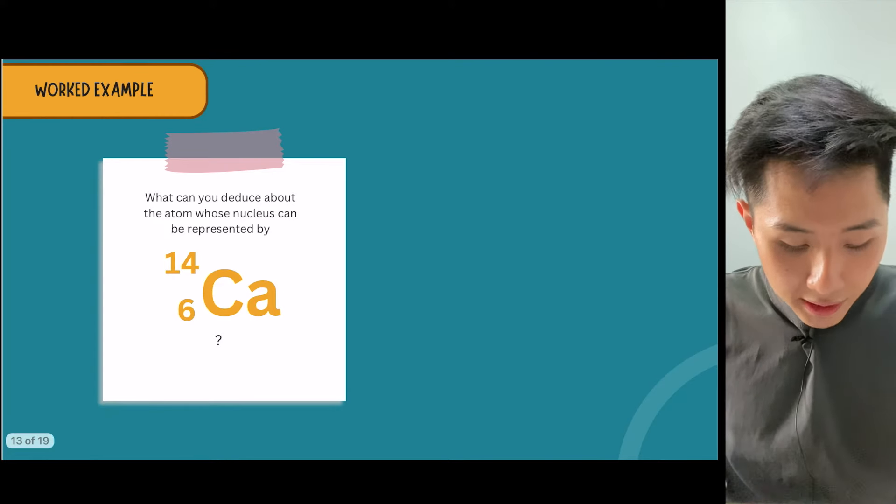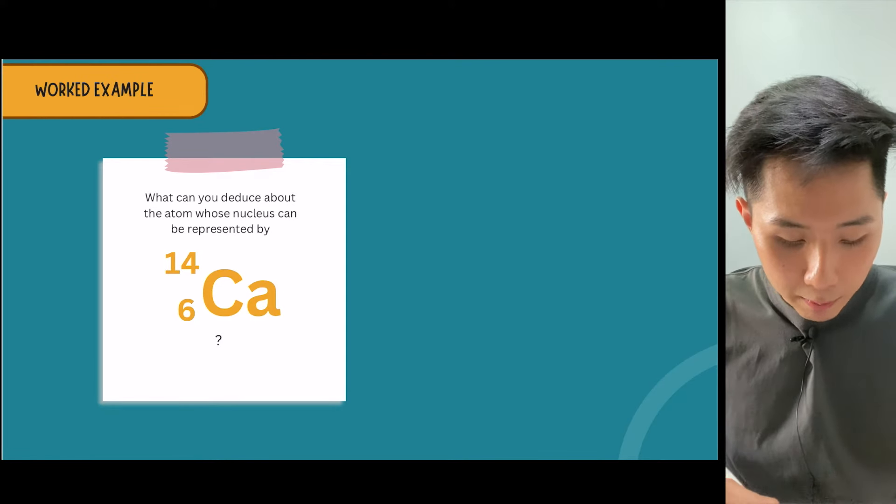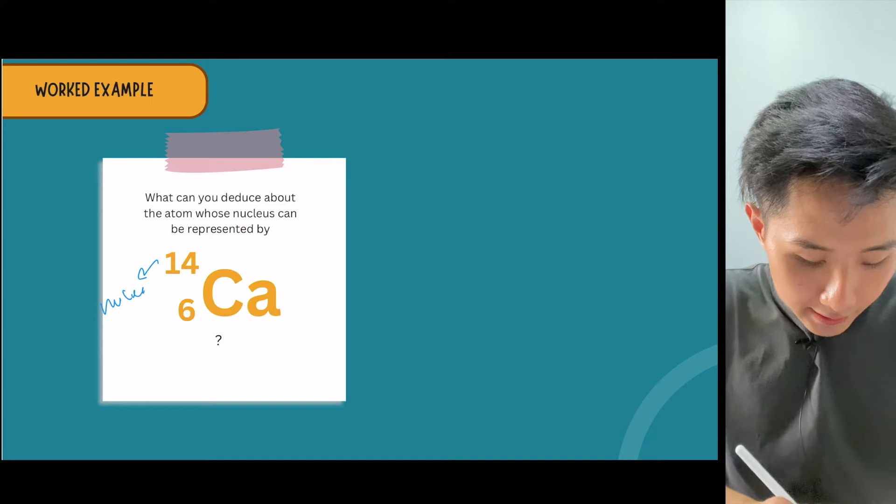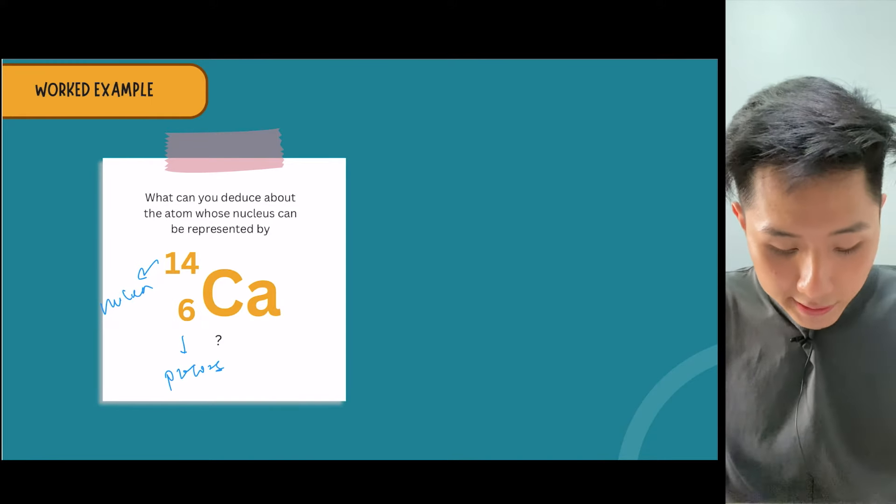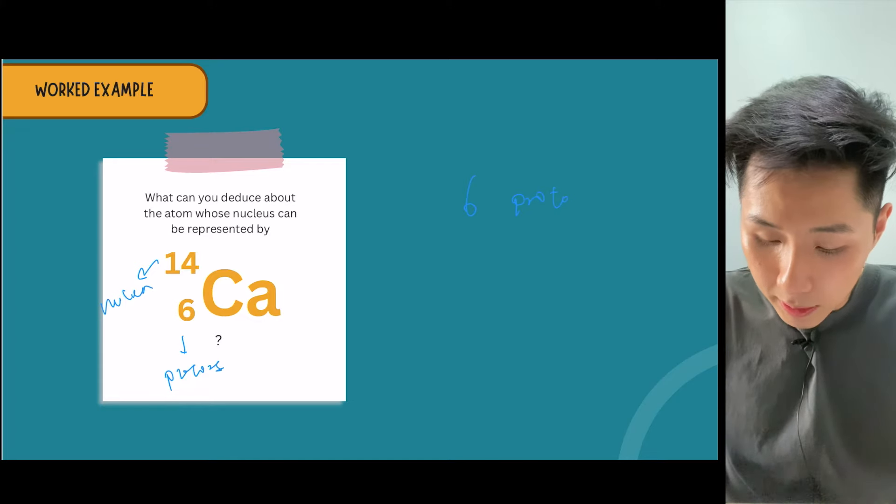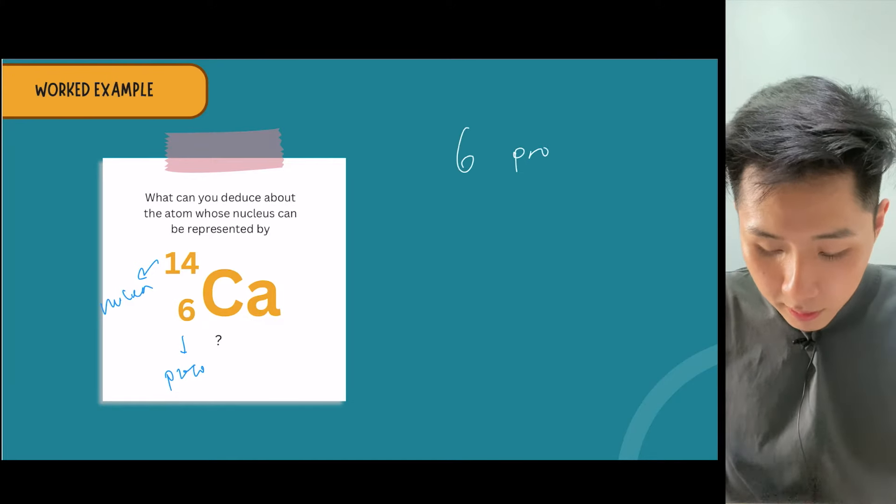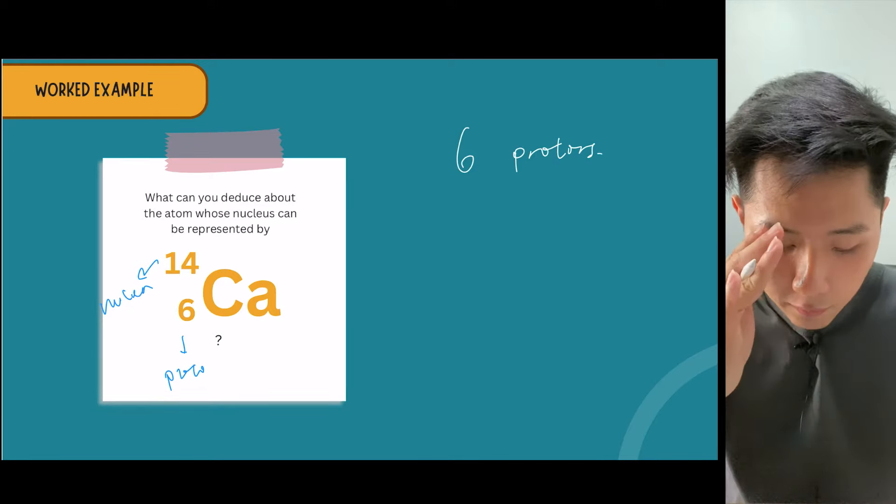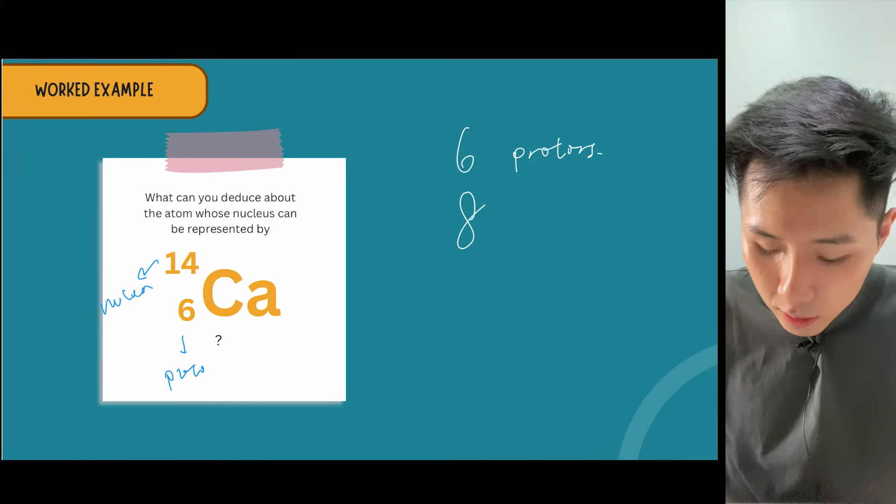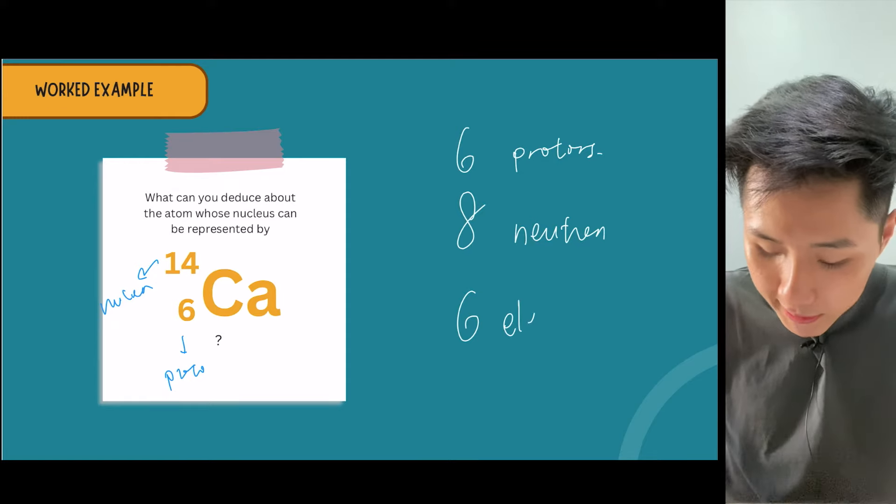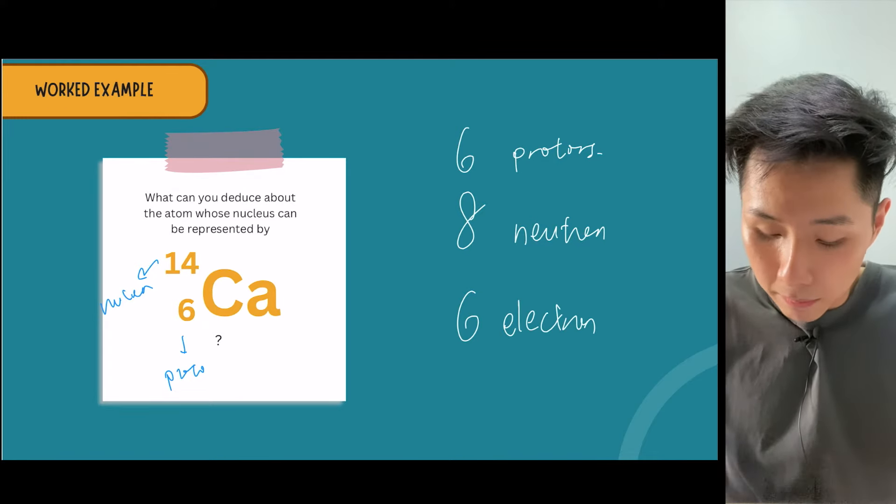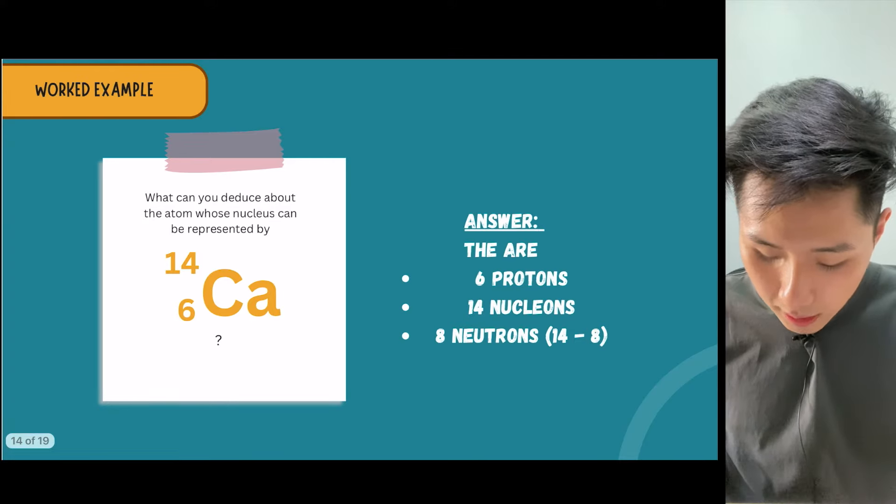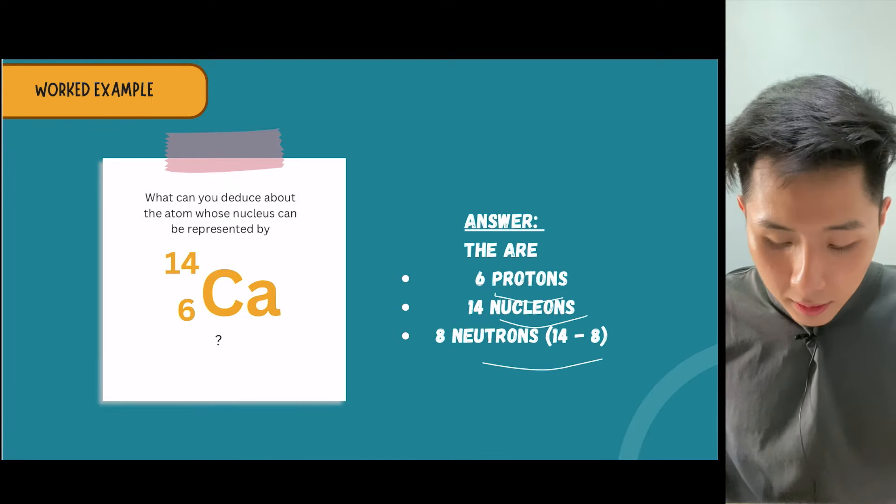What can you deduce from the atom whose nucleus is represented by this? This is calcium with 14 nucleons and 6 protons. This shows there are 6 protons. Because they have 14 nucleons, to find the number of neutrons you use 14 minus 6, therefore you get 8 neutrons and also 6 electrons because we're considering this element is neutral, meaning they have the same amount of electrons and protons.